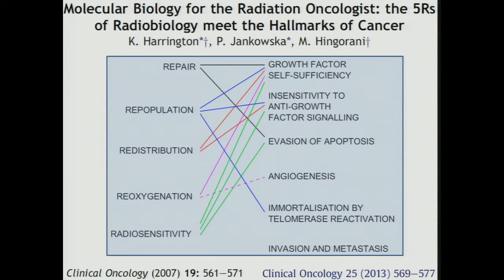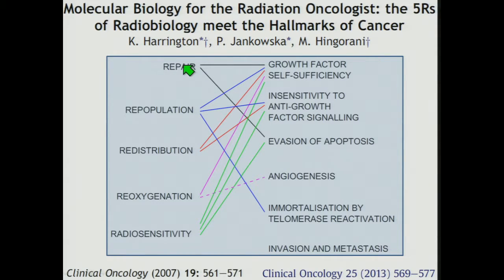The four or five R's of radiobiology were defined from cell culture experiments and tumour experiments, measuring parameters following radiation treatment with very functional assays. A more recent review from Kevin Hartington and colleagues in Clinical Oncology in 2007, updated in 2013, tried to relate these functional measures — the four R's measured from experimental cells and animals — with a more molecular biology approach to tumour response. The different R's for repopulation and redistribution relate to specific molecular pathways. For reoxygenation, in terms of vascular effects and hypoxia, angiogenesis is the most important molecular parameter identified.